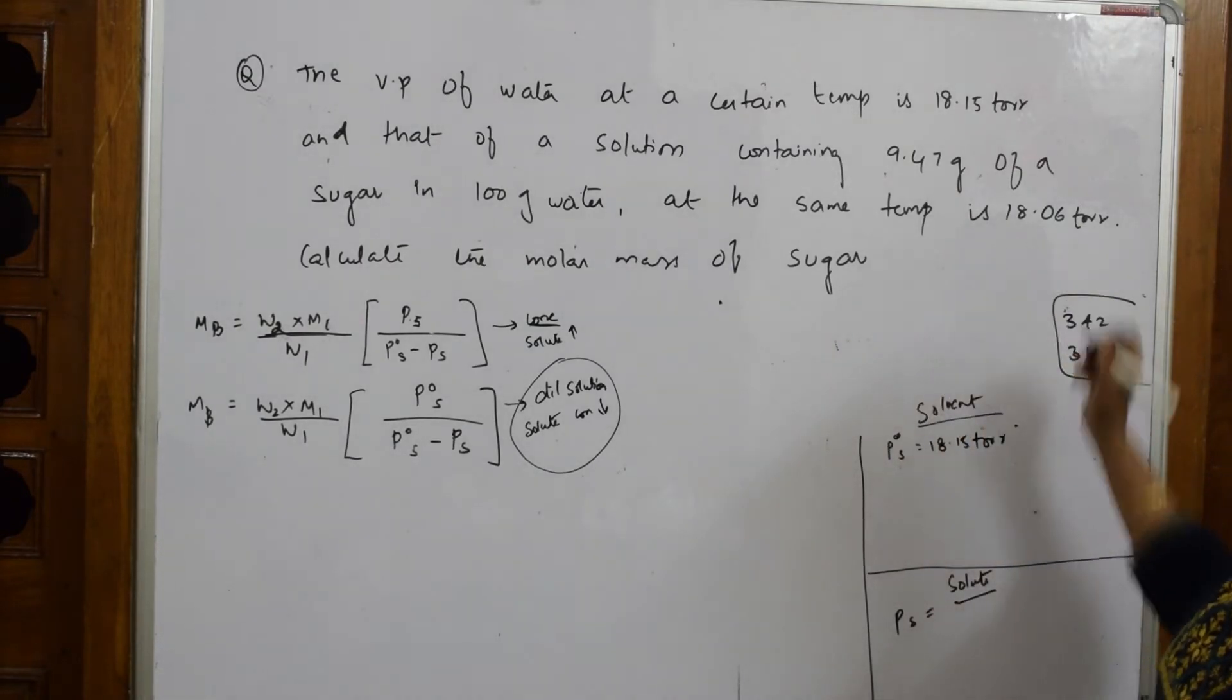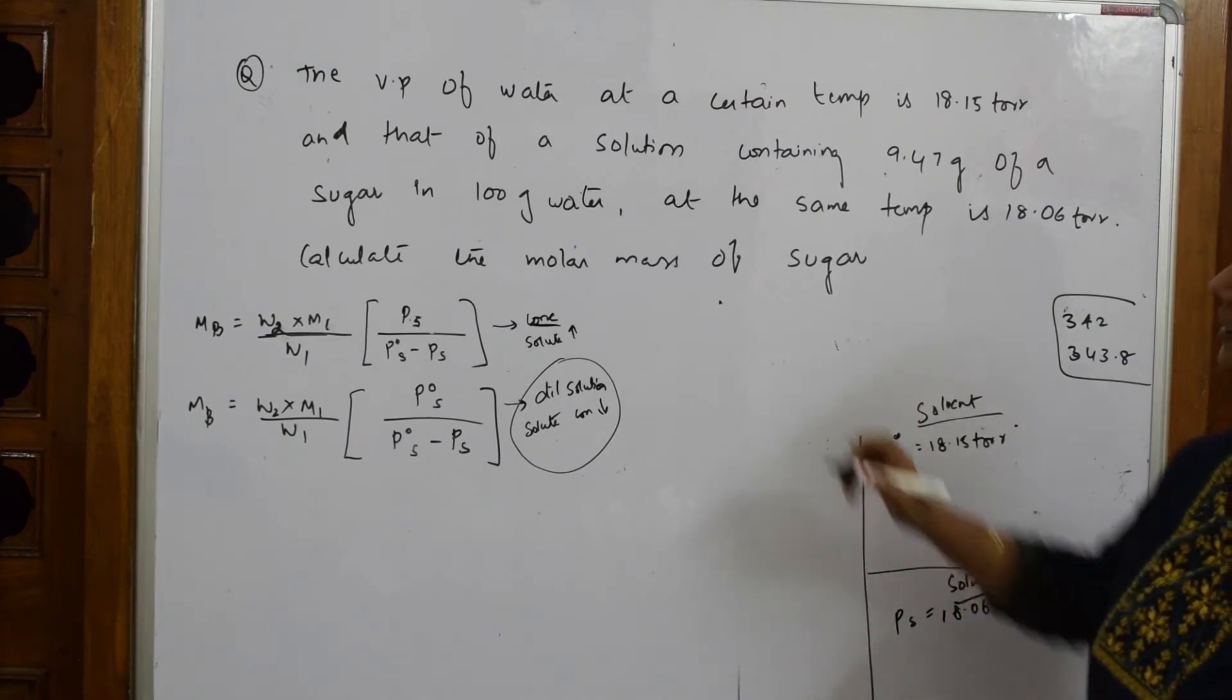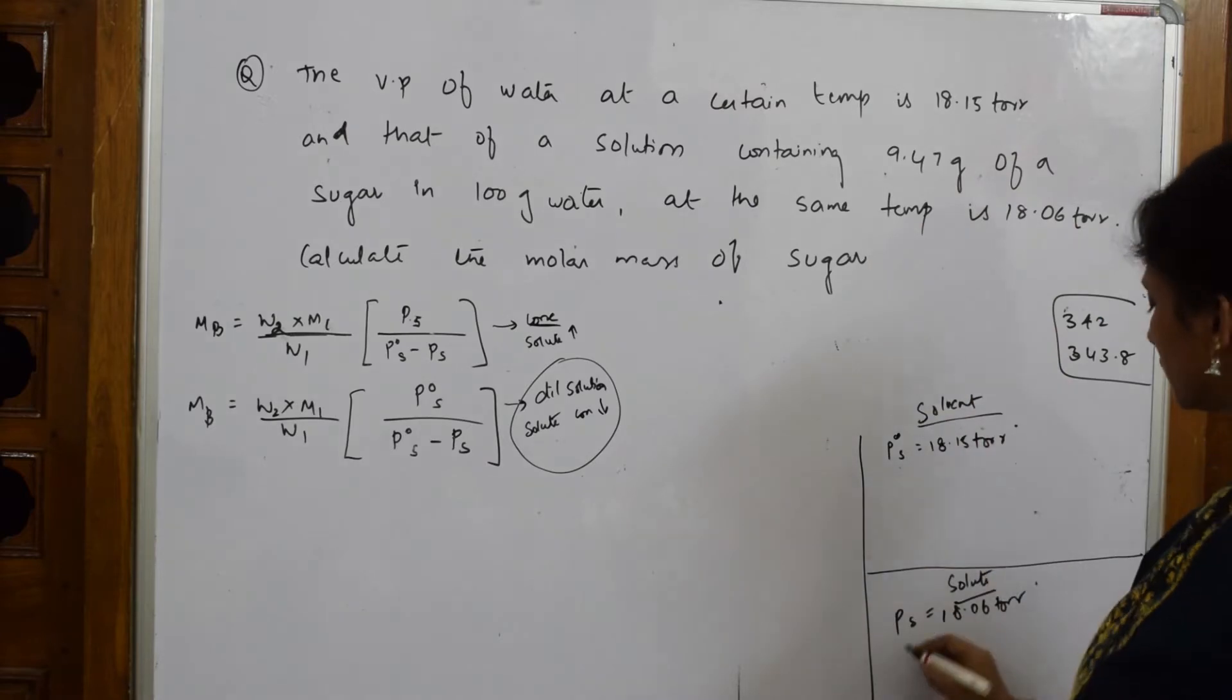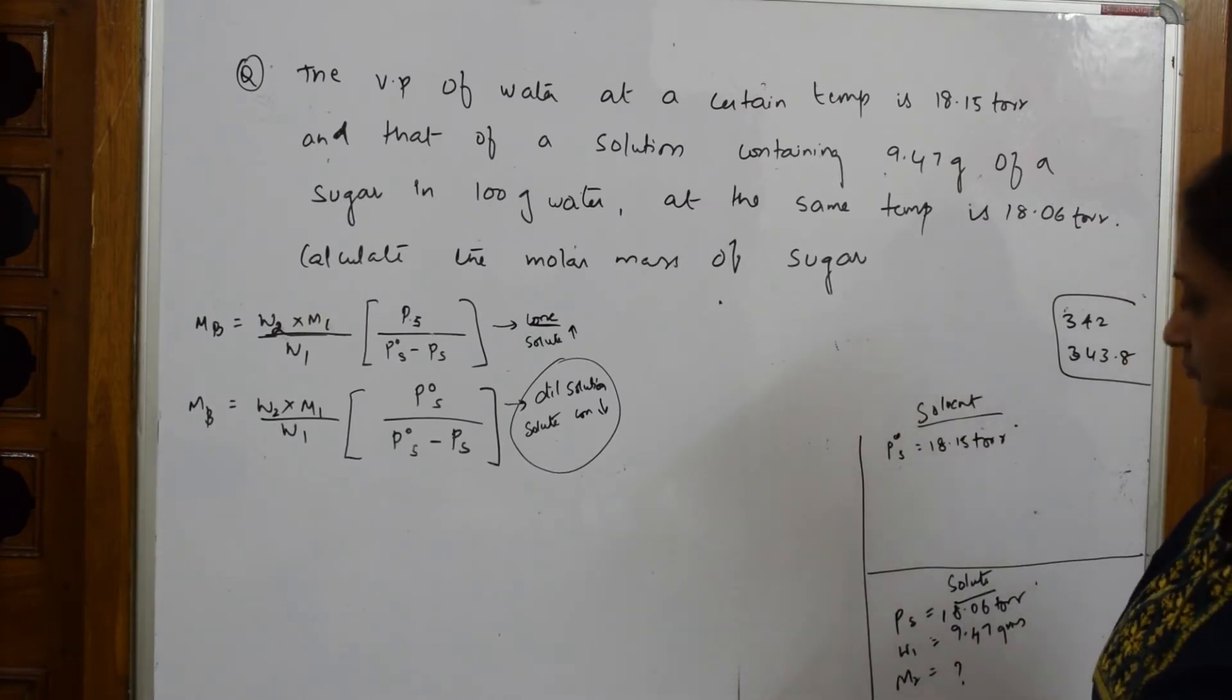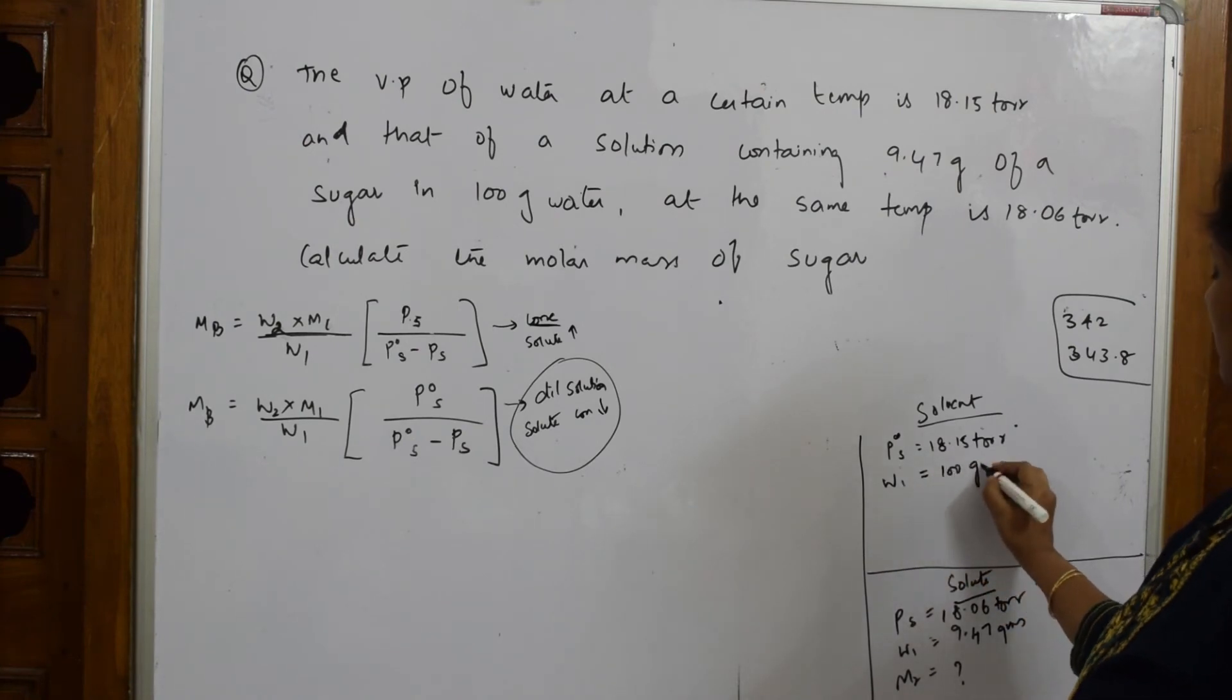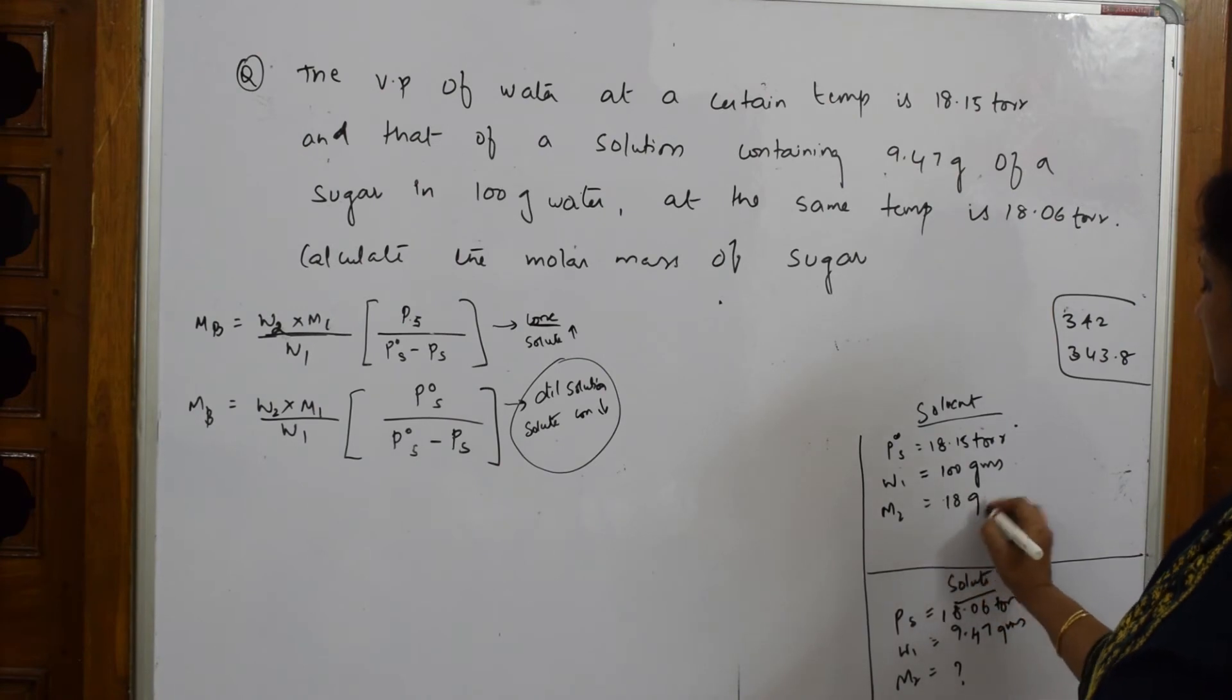The solution's vapor pressure is 18.06 torr, containing 9.47 grams of sugar. So w₂ is 9.47 grams, and M₂ I have to find out. w₁ is 100 grams, and molecular weight of the solvent water is 18 grams. That's it, all the data is with me.